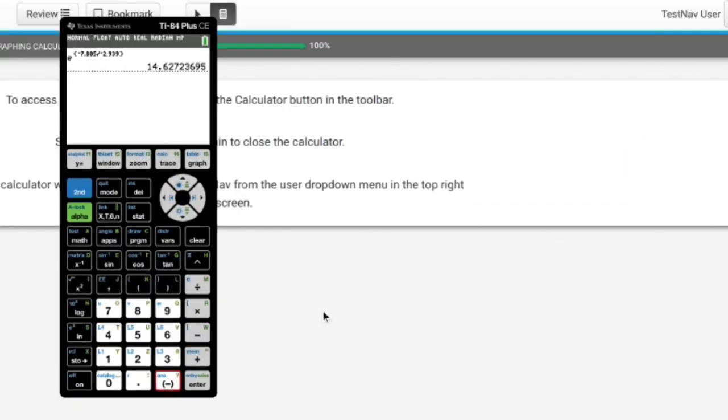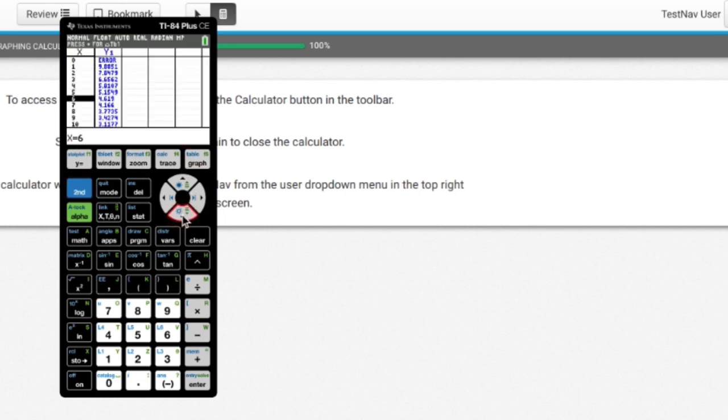All right. So as you may remember from part A, we stored our equation into Y equals. Okay. So now all I have to do to find out the value at C is I could either go to second calc trace type and value, or I can go to my table, run down to six and find out that it's 4.619. And since it rounds to three decimal places, that's all I've got to do.